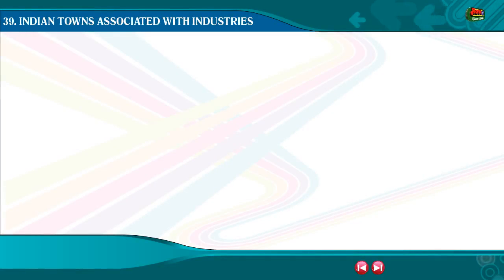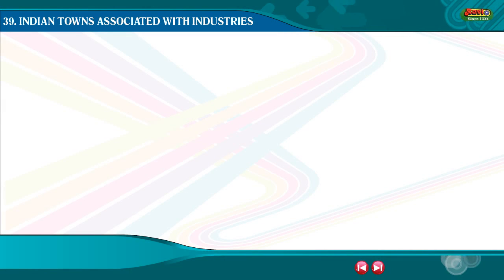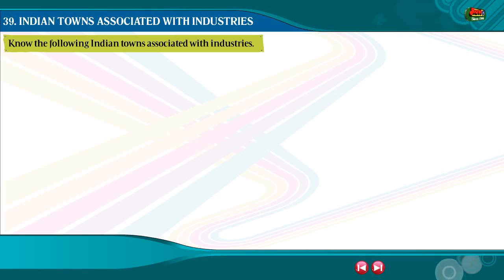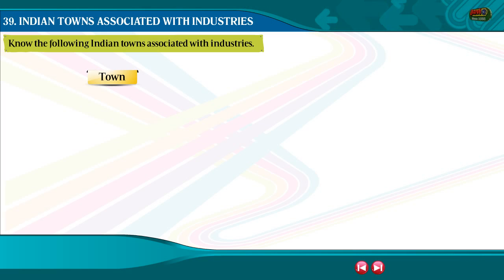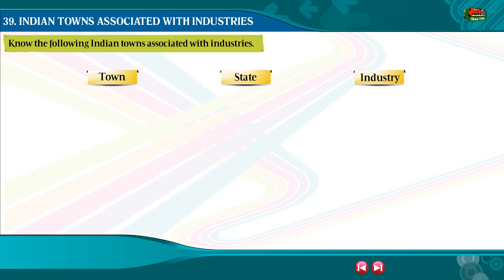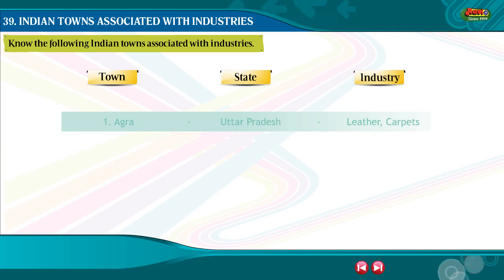Question 39. Know the following Indian Towns Associated with Industries. The table covers Town, State, and Industry.